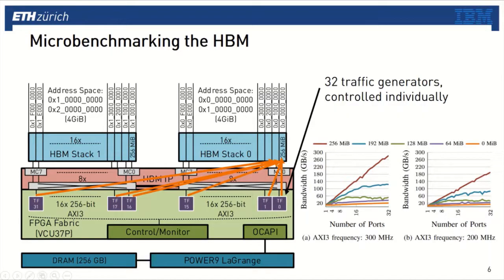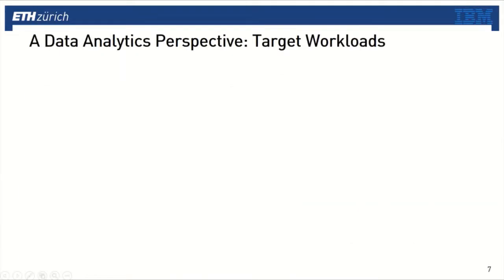The most important outcome of this microbenchmark is that we cannot simply rely on the uniformity abstraction given by the crossbar to get the full bandwidth advantages of the HBM. Instead, we have to smartly partition and place our data at runtime to create as little contention as possible on the crossbar. Our goal is to show where HBM can be useful in a data analytics setting.